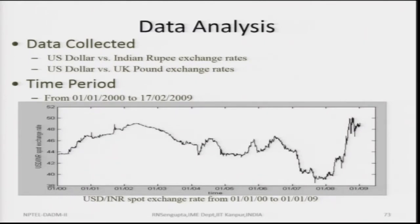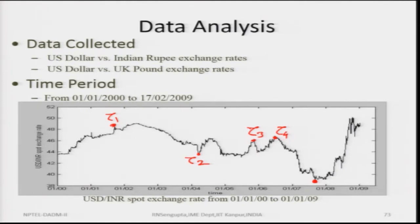We take the US dollar to Indian rupees and US dollar to UK pound exchange rates from 2000 to 2009, from 1st January to 17th February, and examine the exchange rate of USD to Indian spot rate. Looking at the graph, you can see there is a change point here, or here, or possibly here — this total time frame is capital T, and we try to find tau 1, tau 2, tau 3, tau 4, and so on. This pictorial view will be verified using ANN with the conjugate gradient method, genetic algorithm, and simulated annealing.